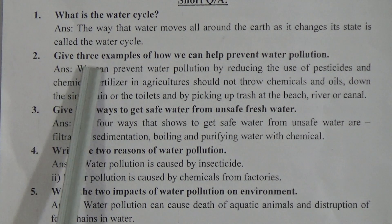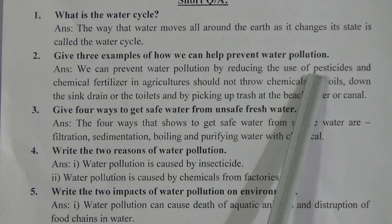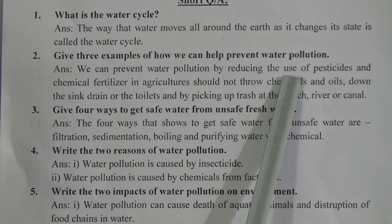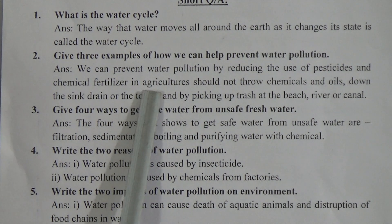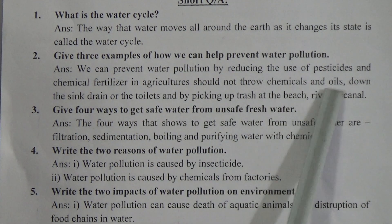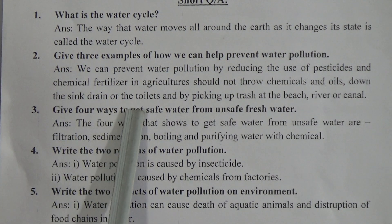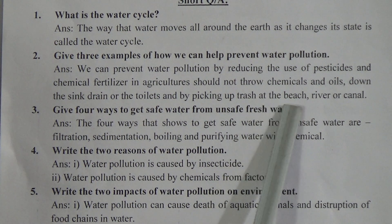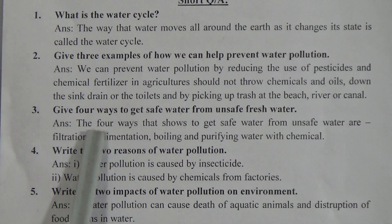Short question number 2: Give 3 examples of how we can prevent water pollution. We can prevent water pollution by reducing the use of pesticides and chemical fertilizer in agriculture, should not throw chemicals and oils down the sink, drain or the toilets, and by picking up trash at the beach, river or canal.